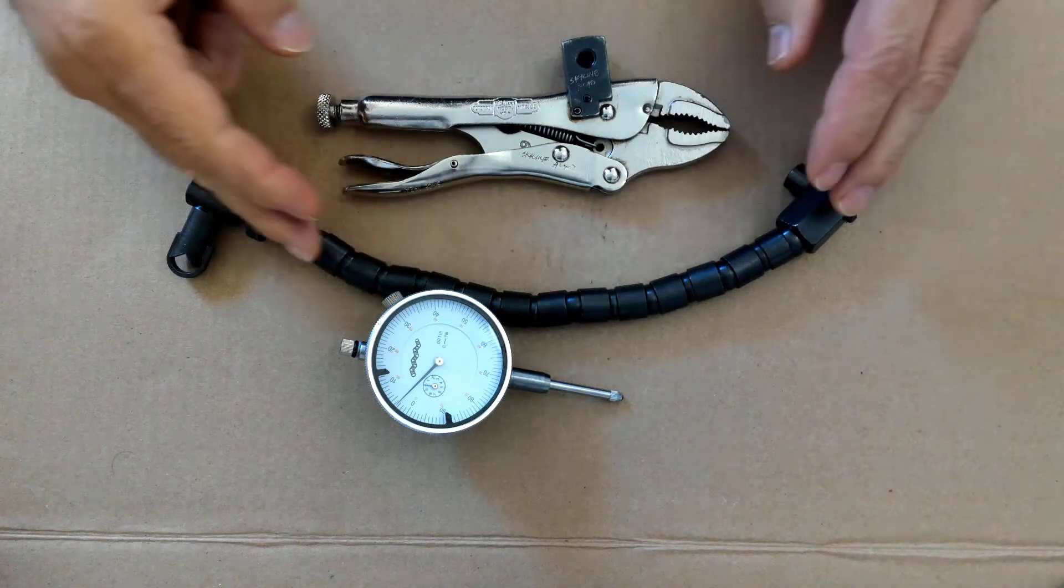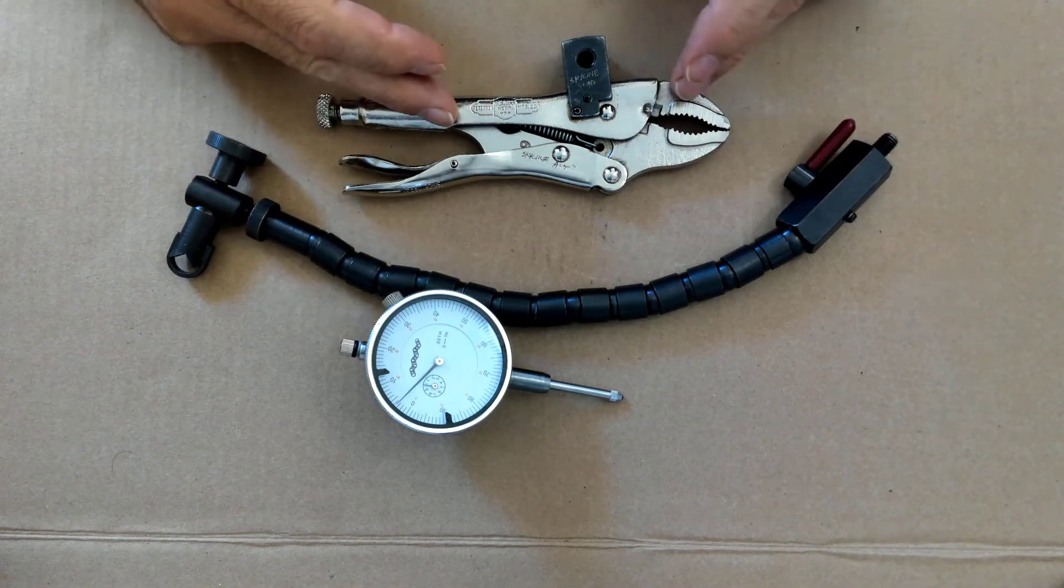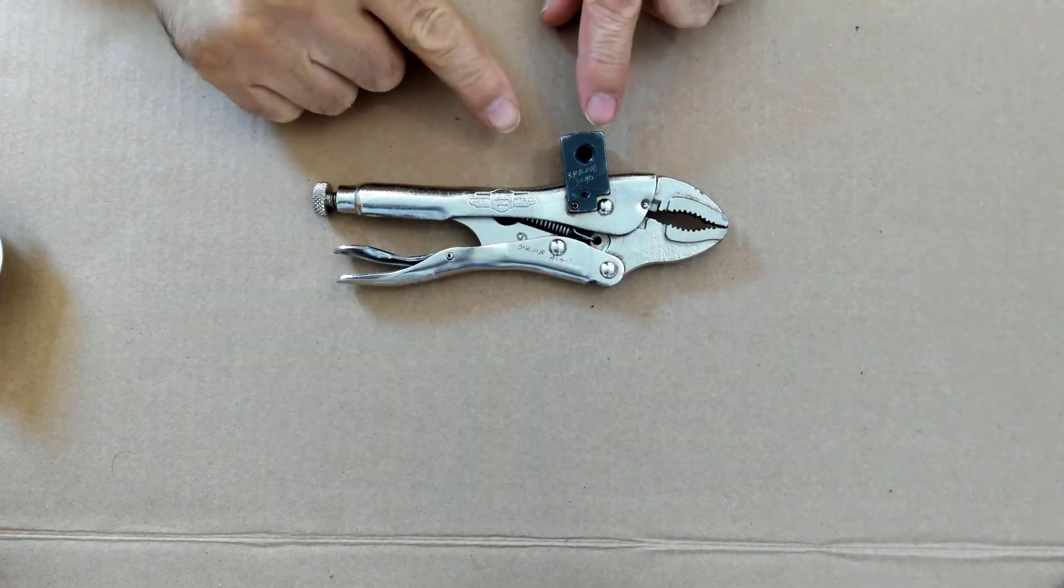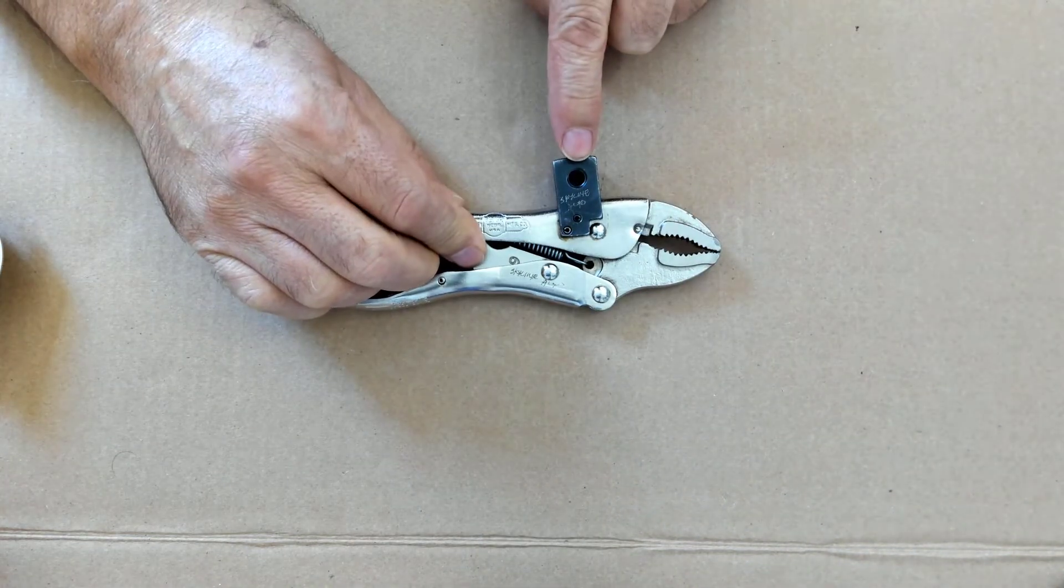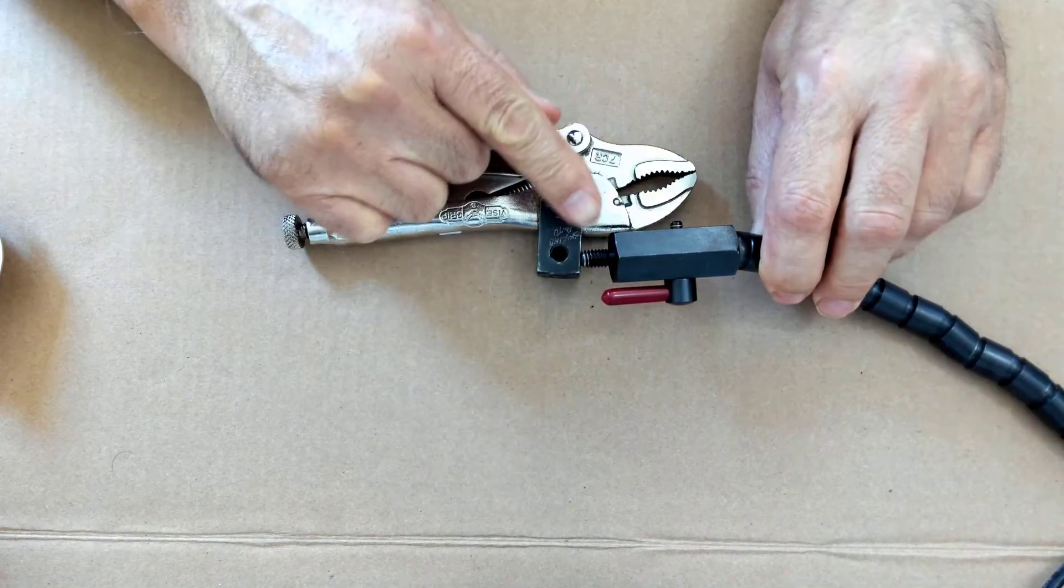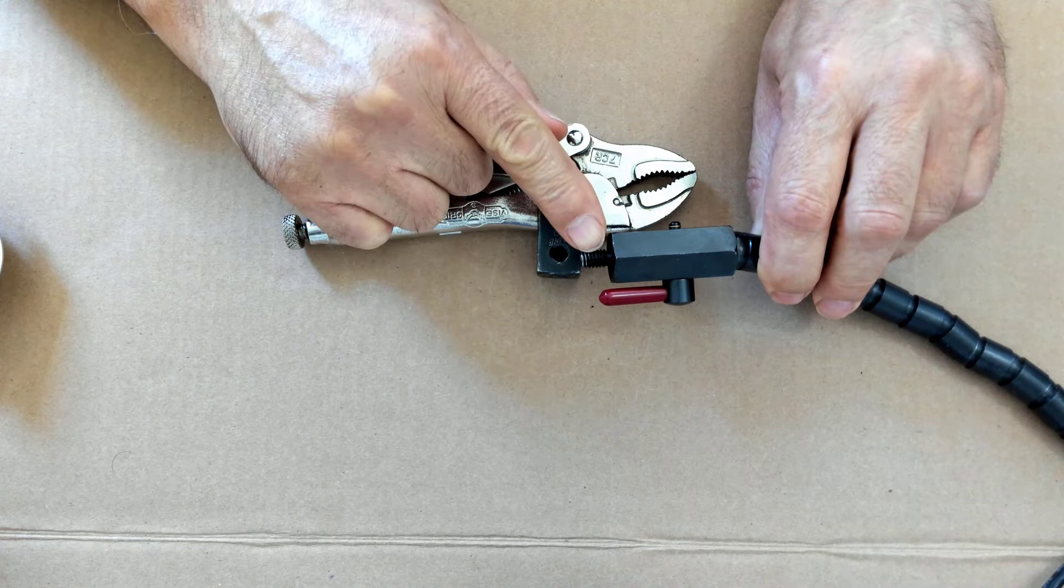This is the flexible snake with a vise grip mount for holding your dial indicator. The vise grip mount has three locations for the flexible snake to attach to. This is attached by using the threaded part.